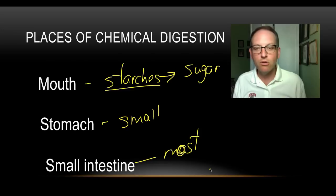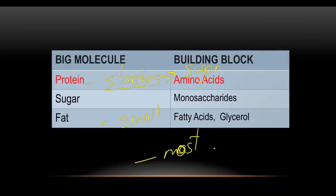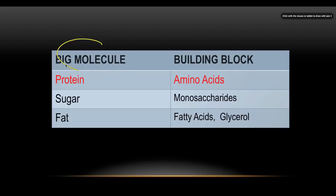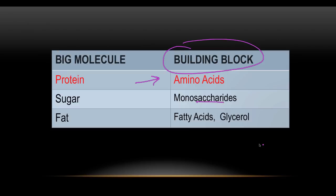The stomach plays only a small part in chemical digestion. Most of your chemical digestion takes place in the small intestine. We basically have three types of foods that we eat: proteins, sugars, and fats. Those are the big molecules we start with, and we convert them chemically into smaller building blocks. Proteins are made of something called amino acids; sugars are made of something called monosaccharides — saccharine being the sugar component; and fats are made of fatty acids and something called glycerol.